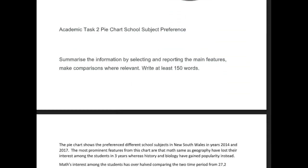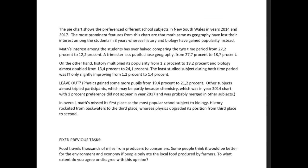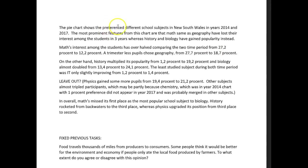School preferences, 2014 and 2017. The pie chart shows the different preferred school subjects in New South Wales in the years 2014 and 2017. The most prominent features from this chart are that maths and geography have lost interest among the students in the three years, whereas history and biology have gained popularity instead.